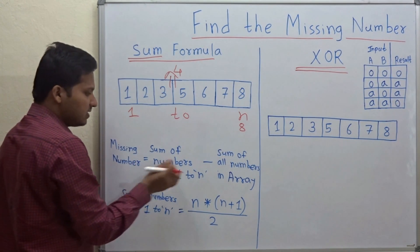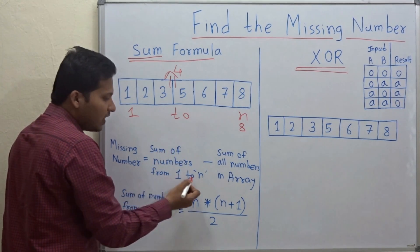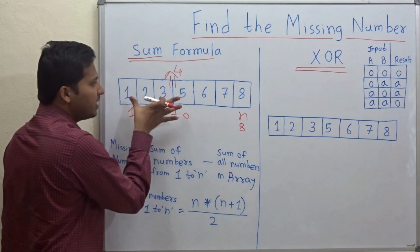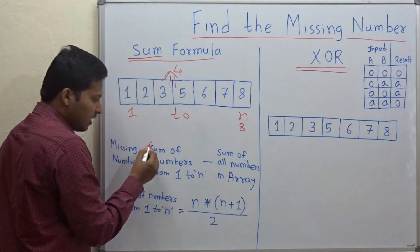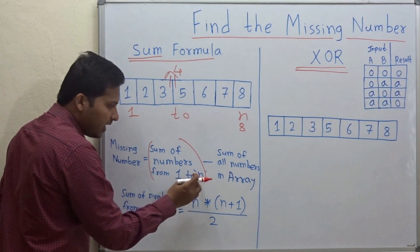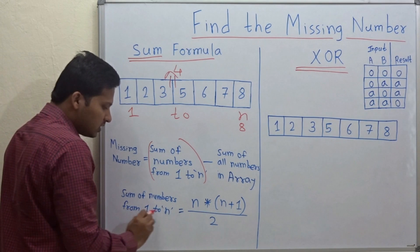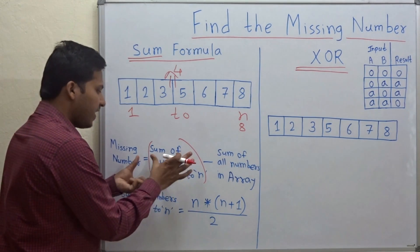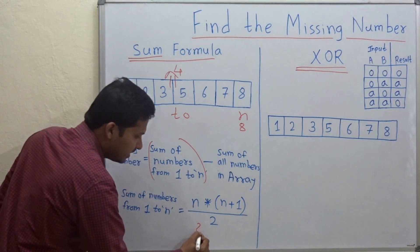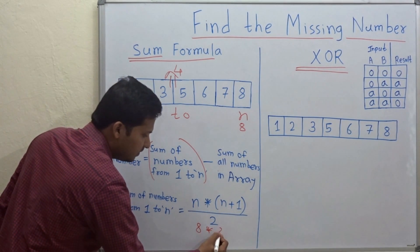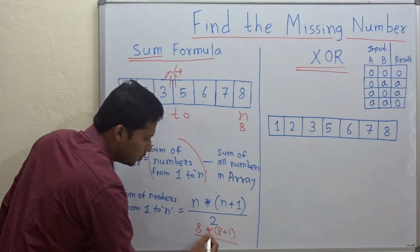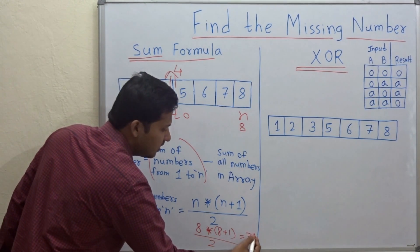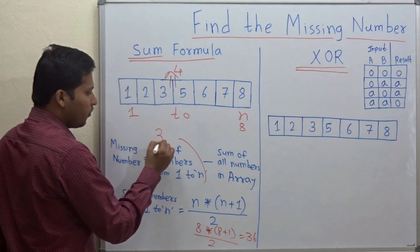The first method is simple. The missing number equals the sum of numbers from 1 to n minus the sum of all numbers actually present in the array. The formula for sum from 1 to n is n×(n+1)/2. Here n is 8, so 8×9/2 = 72/2 = 36. So the expected sum is 36.